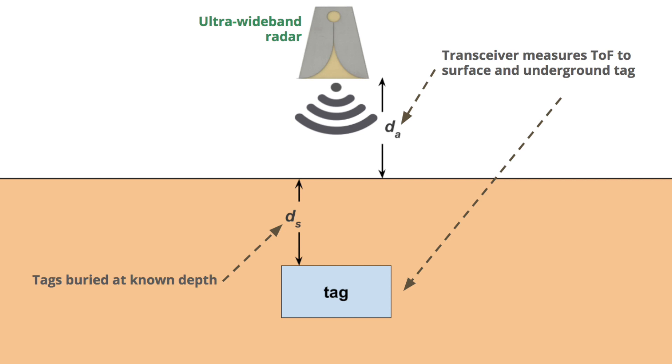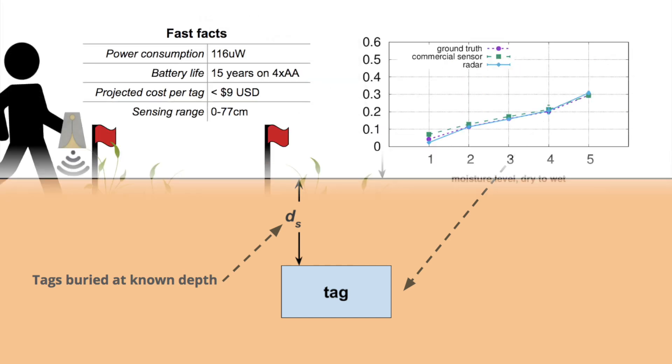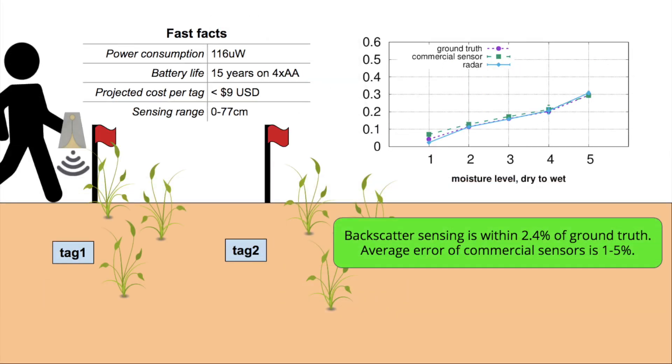Once we know the velocity of the wave, we can calculate the soil moisture. Using this approach, we're able to achieve accuracy comparable to state-of-the-art sensors at a fraction of the cost.